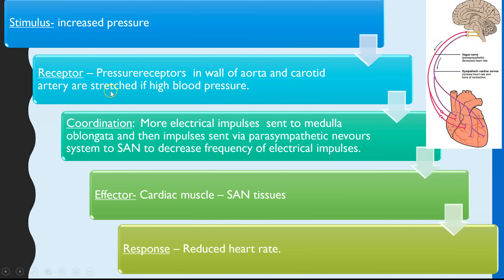If blood pressure is too high, it stretches the blood vessels, which in turn stretches the pressure receptors and triggers an action potential along the sensory neuron to the medulla oblongata. More impulses are sent along the parasympathetic nervous system to the SAN, which decreases the frequency of electrical impulses. The effector is the cardiac muscle and SAN tissues, releasing fewer waves of depolarisation, and the response is a reduced heart rate.